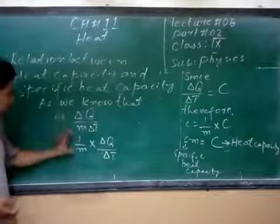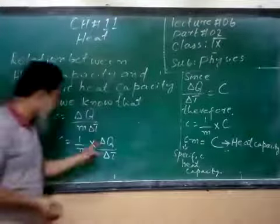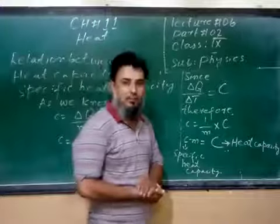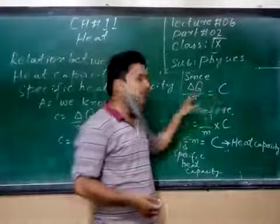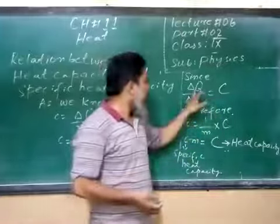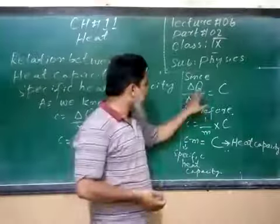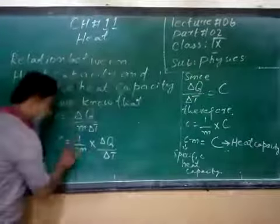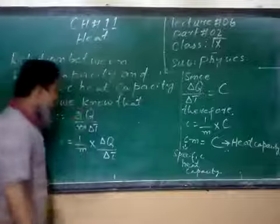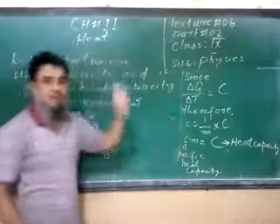Now, ΔQ/ΔT is equal to heat capacity, capital C. We have from a previous part that ΔQ/ΔT equals capital C, the heat capacity.